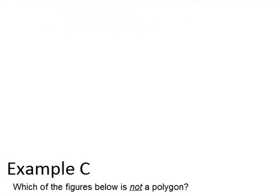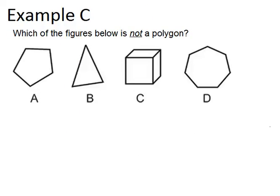Finally, let's look at example C. Which of the figures below is not a polygon? So this time we're looking for which one is not a polygon, as opposed to example A, where it said which one is a polygon.